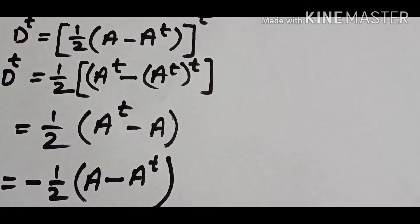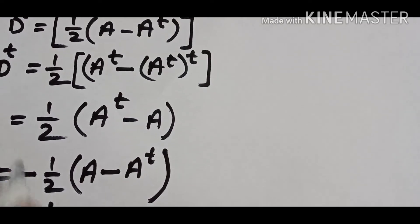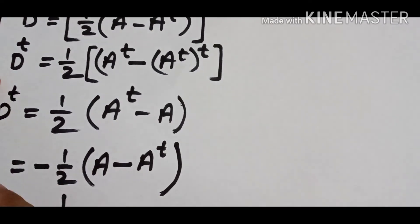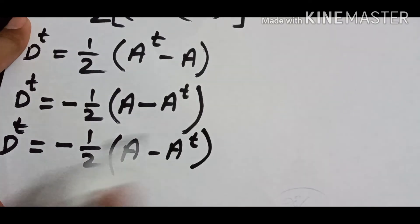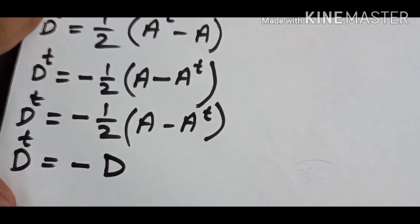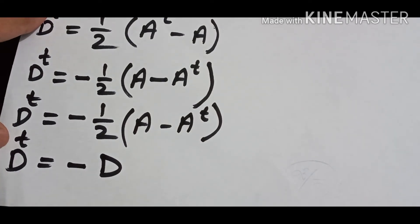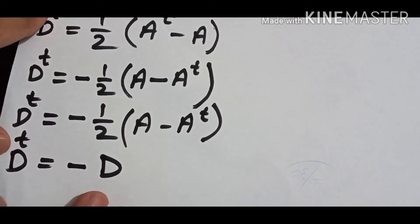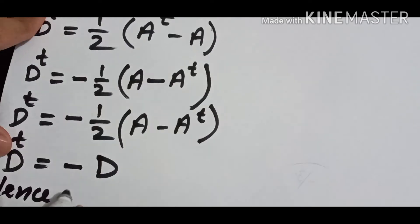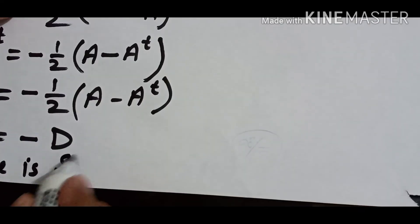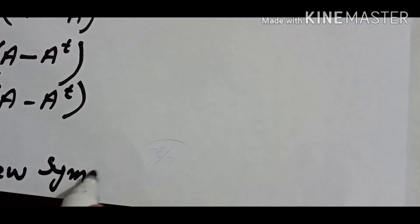So what we are getting here is minus ½(A − Aᵀ), meaning D transpose equals minus D. When a matrix's transpose equals its negative, we call it a skew-symmetric matrix. Hence, D matrix is skew-symmetric.